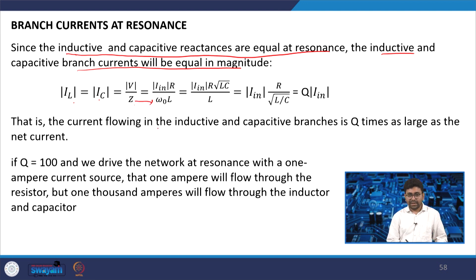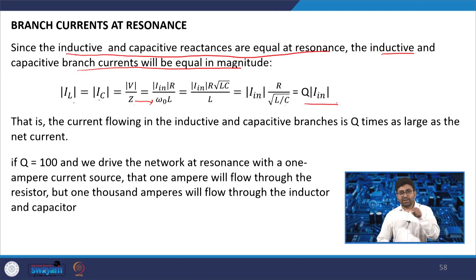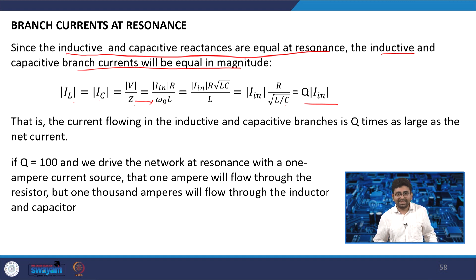Then IL = (Iin × R) / (ω₀L), and replacing ω₀ with 1/√(LC) you can write it as Iin × Q. So Q times the input current flows through your tank circuit — the current flowing in the inductor and capacitor branch is Q times the input, which is very high.